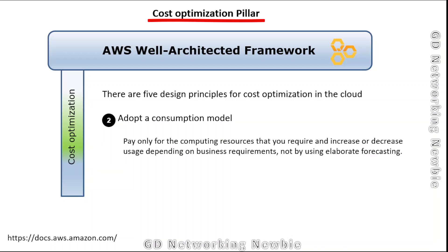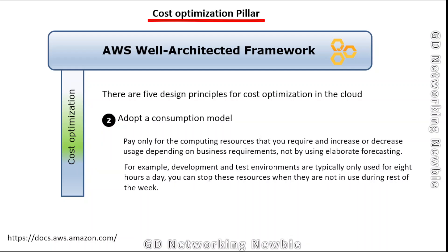The second principle is adopt a consumption model — pay only for the computing resources that you require. Don't base your provisioning purely on forecasting and get all resources at once. In the cloud, you can increase or decrease usage depending on business requirements. For example, development and testing environments are typically only used for eight hours a day. When workers are not present, you can stop those resources and save on your budget.